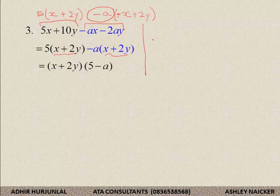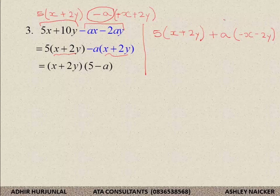I got the first part as 5 into x plus 2y. If I had removed positive a as common factor, I would end up with minus x minus 2y and the brackets would not be the same. But I could change that sign and change the signs on the inside — multiplying by minus 1 — which brings me back to the same answer. You can do it that way too, no problem. But the brackets must be the same.